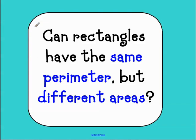So I want you to take a few seconds and think about that. Can you think of a situation where a rectangle would have the same perimeter as another rectangle but the areas are different? And let's see if we can prove this question right or wrong.